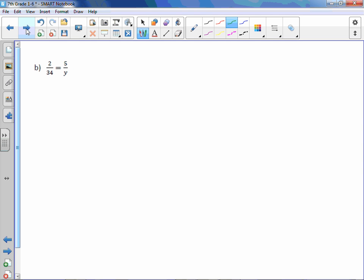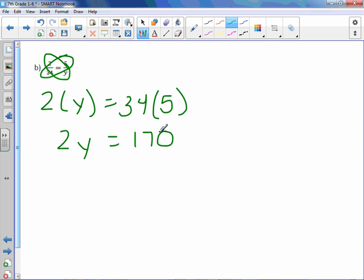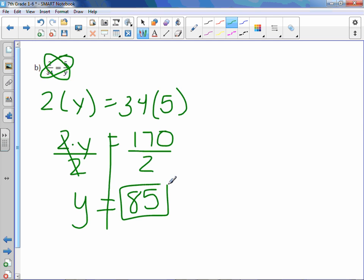Let's do another one. It doesn't matter which one you do first. 2 times y equals 34 times 5. Again, you may want to use a calculator. 2y equals 34 times 5 is 170. Solve the equation. 2 is attached to y by multiplication. We need to do the inverse, which is to divide by 2. y equals 2 goes into 170, 85 times. So to make this proportion true, y must be 85.